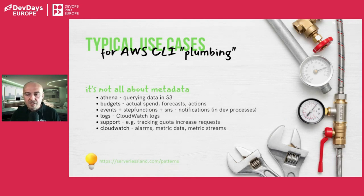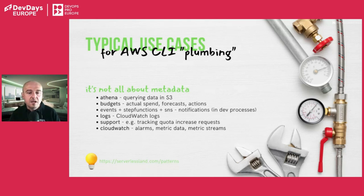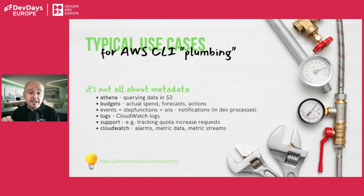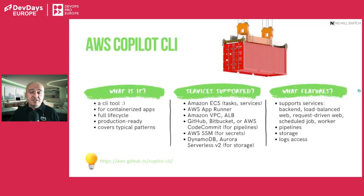There are hundreds of AWS CLI modules, and here are the ones I use most on a daily basis: Athena for querying data in S3 directly from the CLI without the console; Budgets for tracking cost information; Lambda, Step Functions, and SNS combined for small serverless automation scripts in my development process; and CloudWatch Logs for observability if you're using the native AWS stack.